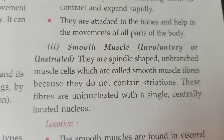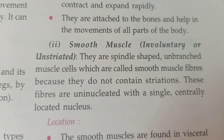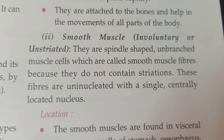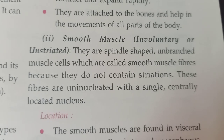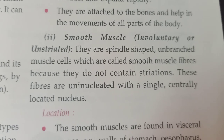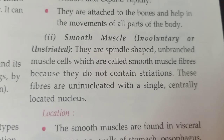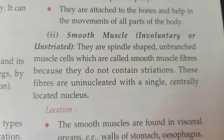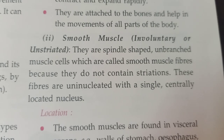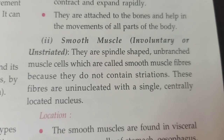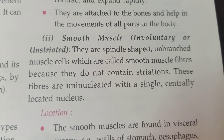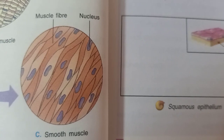The second type is smooth muscles, also called involuntary or unstriated muscles. They are spindle-shaped, unbranched muscle cells called smooth muscle fibers because they do not contain striations. These fibers are uninucleated, with a single centrally located nucleus.